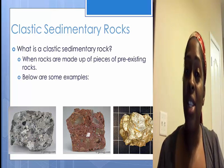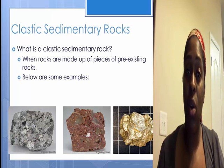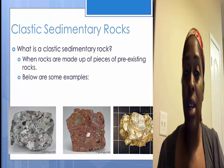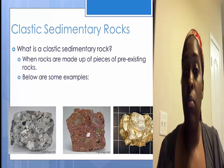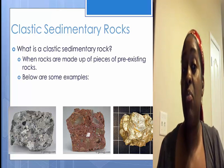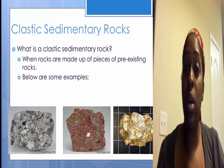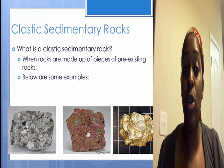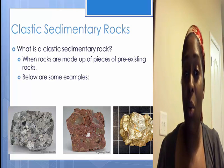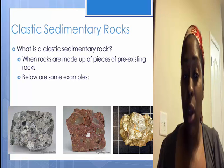What a clastic sedimentary rock is, is basically when rocks are made up of pieces of pre-existing rocks. So it's a bunch of little rocks that come together to form a new sedimentary rock. Below are a couple of examples.